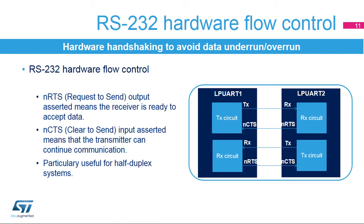In the RS-232 standard, it is possible to control the serial data flow between two devices by using the NCTS input and the NRTS output. These two lines allow the receiver and the transmitter to alert each other of their state. Both signals are active low, and this prevents dropped bytes or conflicts in case of half-duplex communication.